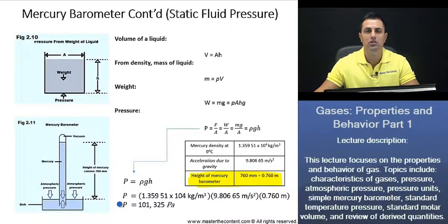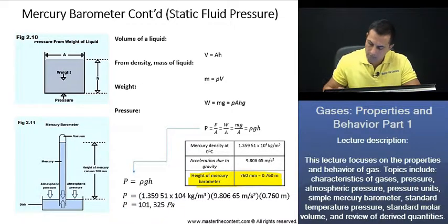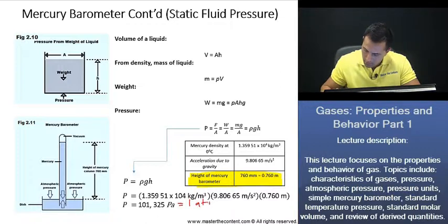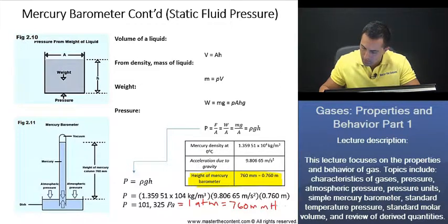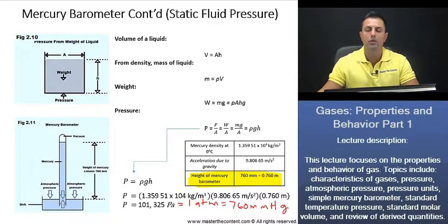...we find that the pressure exerted by that mercury column is going to be 101,325 pascals, which is going to be equivalent to one atmosphere, which is equivalent to 760 millimeters of mercury. Okay, great. Let's now continue on to our next slide.